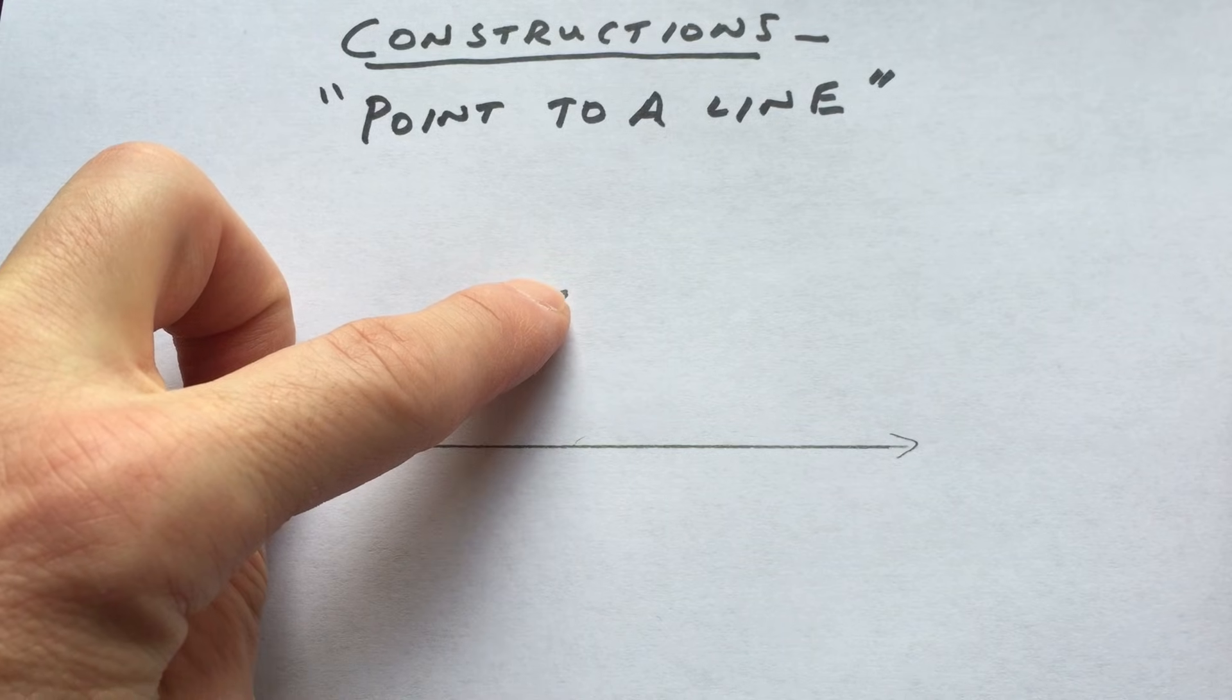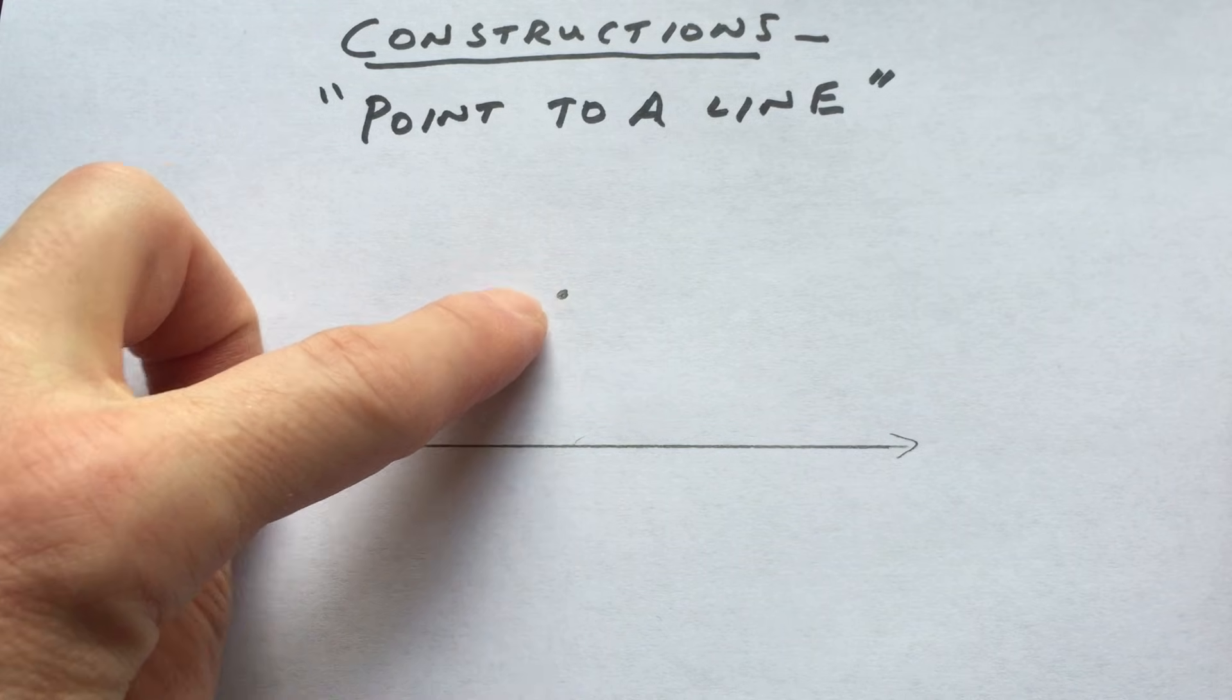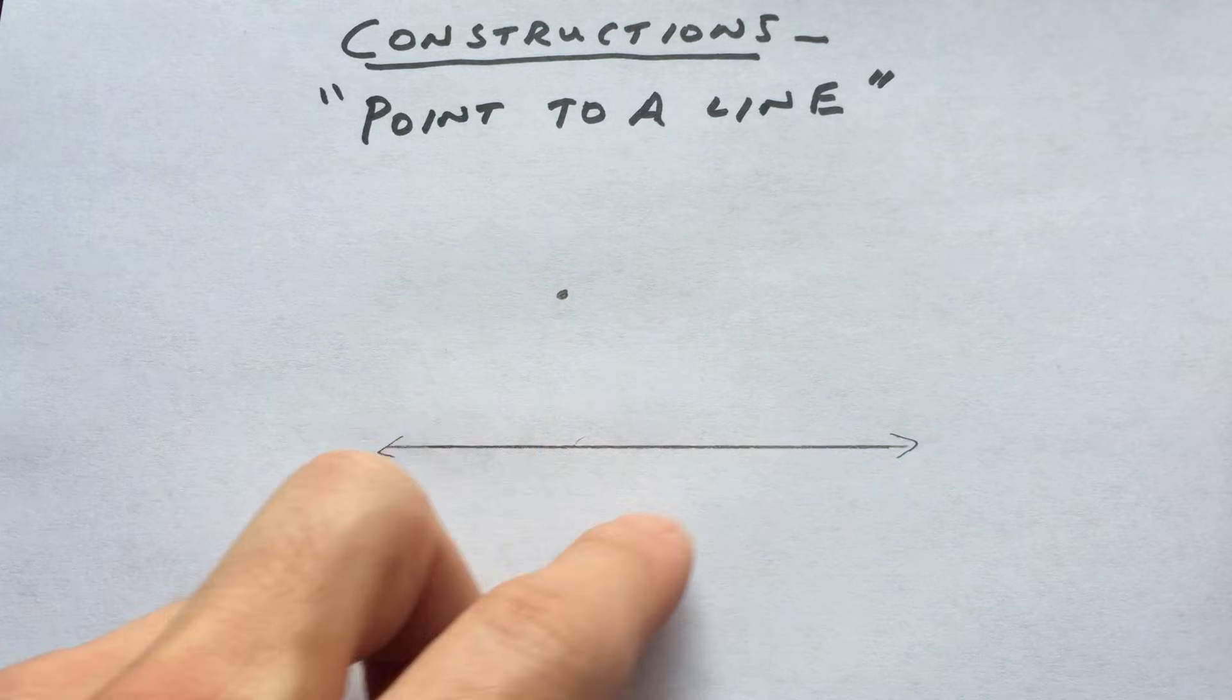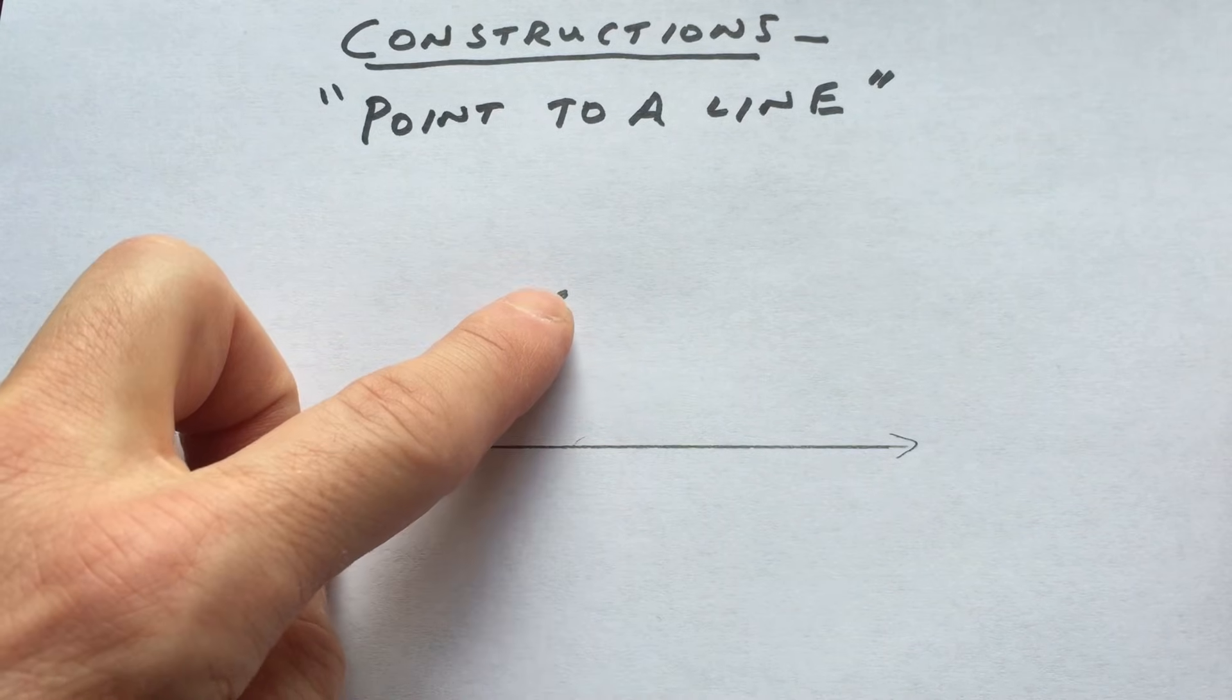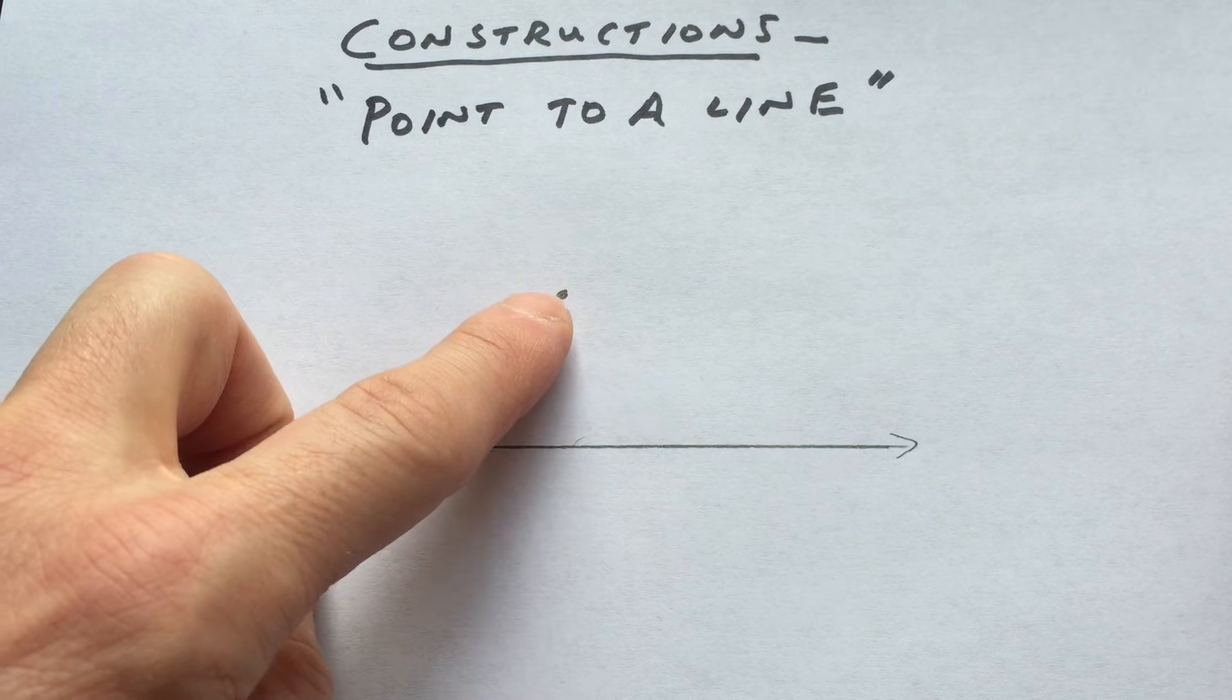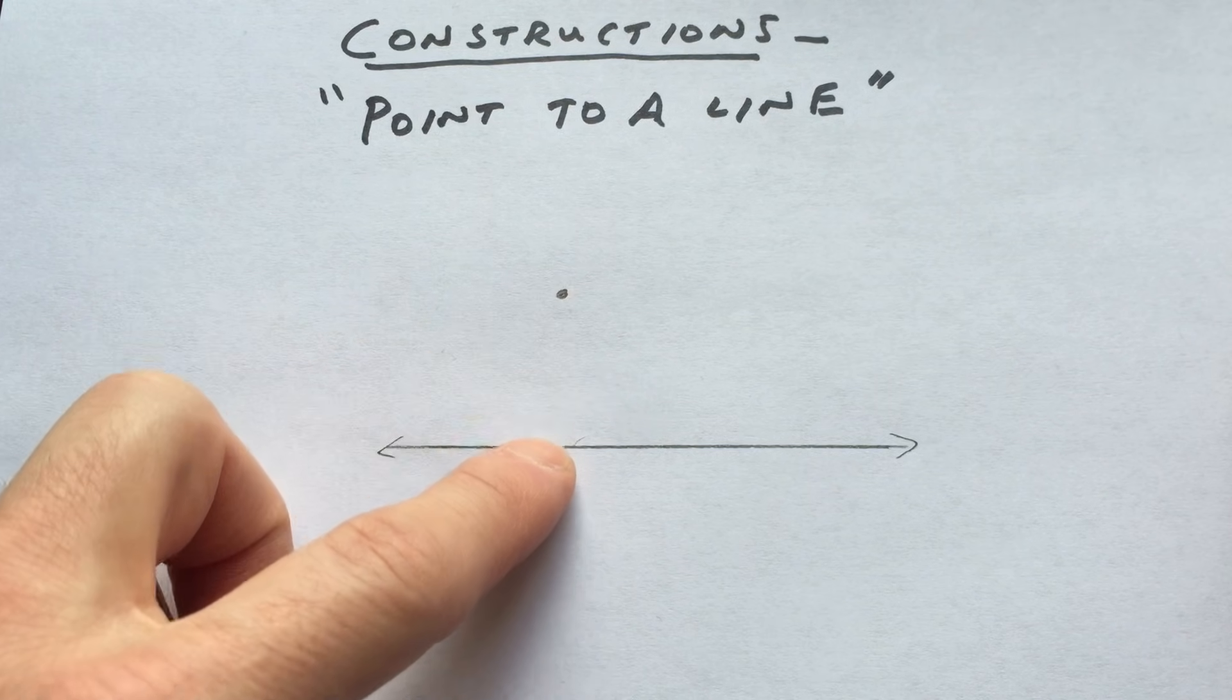Otherwise, if you try to measure from the point to the line this way, or this way, or over this way, those are all going to be different distances. There's only going to be one shortest distance from the point to the line, and that's going to be the perpendicular distance.